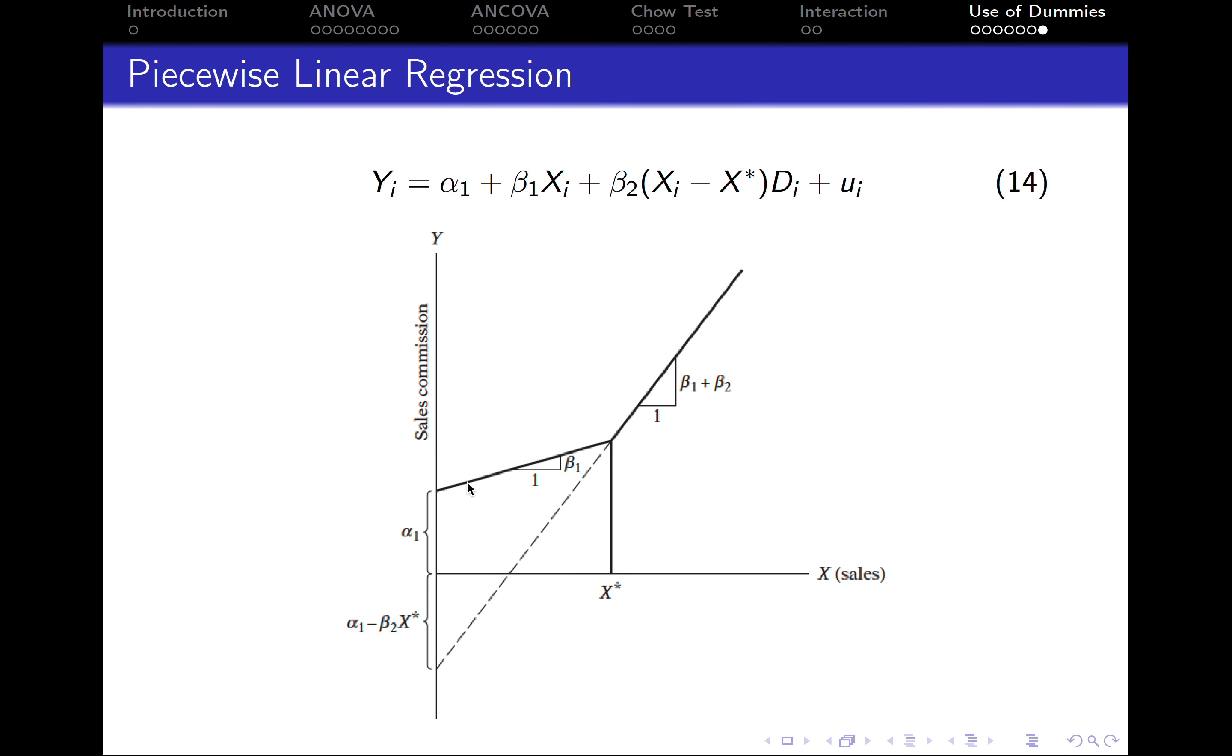Up to the target level, the slope of the line is beta 1, because the dummy variable equals 0, so everything here disappears. What is left is alpha 1 plus beta 1 Xi. Therefore, the slope of this line is just beta 1.